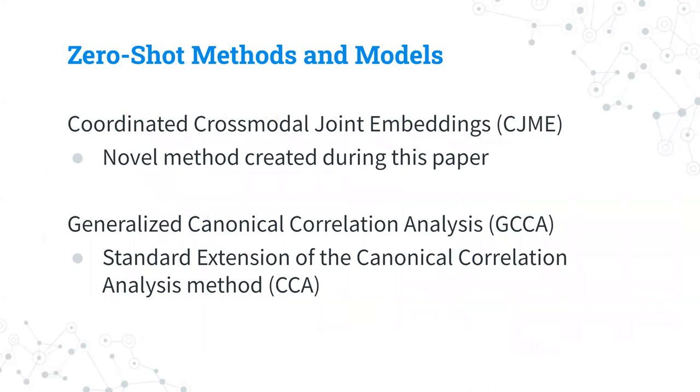Here are the two types of models used for testing and experimenting. The coordinated cross model joint embeddings was a novel method created specifically to be used during this paper. It was compared against the generalized canonical correlation analysis, GCCA, which is a continuation of the standard extension of the canonical correlation analysis method, CCA, which is typically used only for two modalities, image and text.